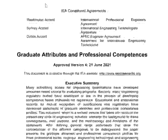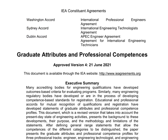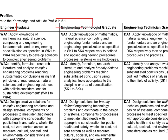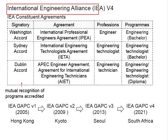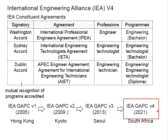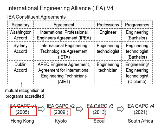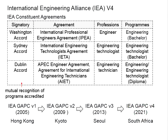This has been implemented throughout all signatory countries under the Washington Accord, Sydney Accord, and Dublin Accord — for Engineering Programs, Engineering Technologist Programs, and Engineering Technician Programs. The IEA document is now at version 4, released in 2021. The first version was in 2005, second in 2009, third in 2013, and the latest in 2021. There could be newer versions in future, so we need to closely monitor future releases.